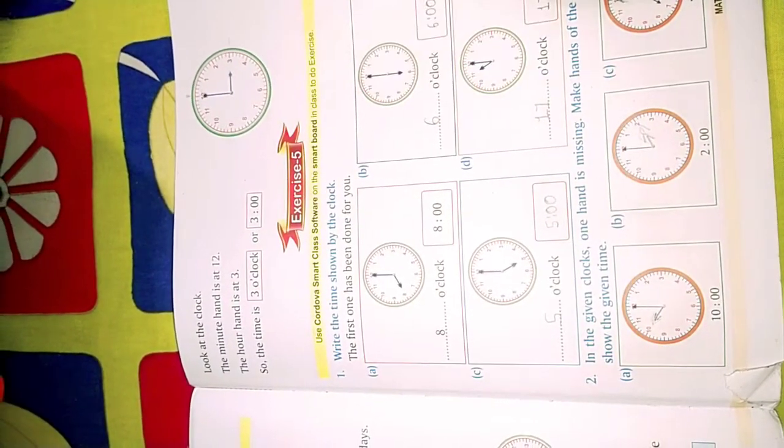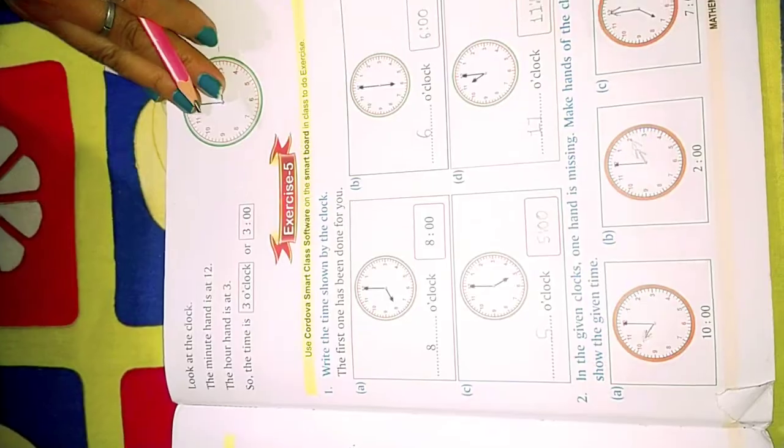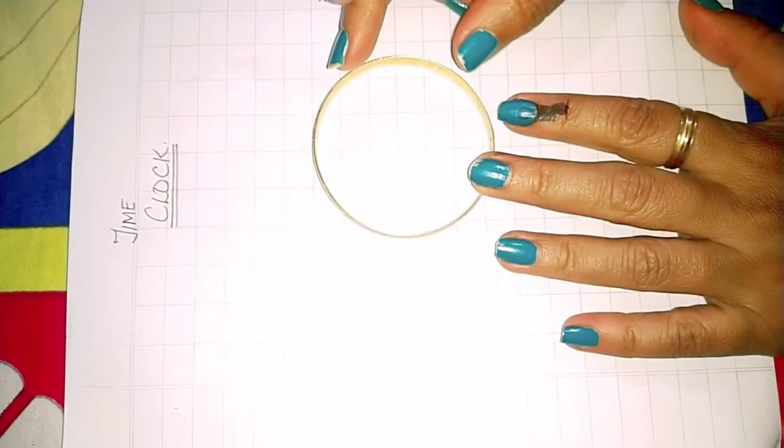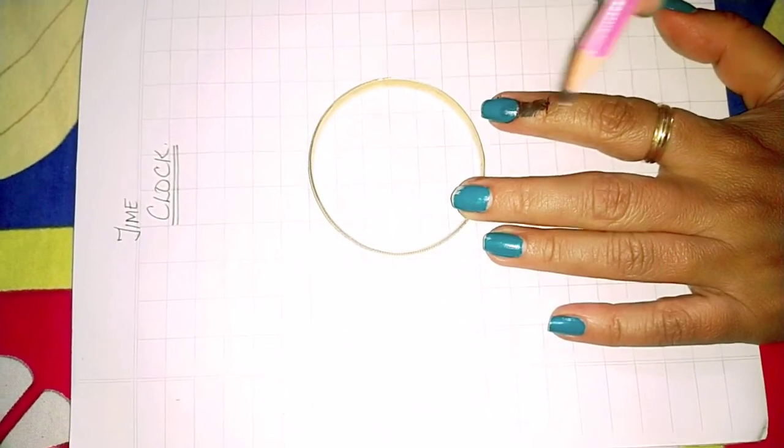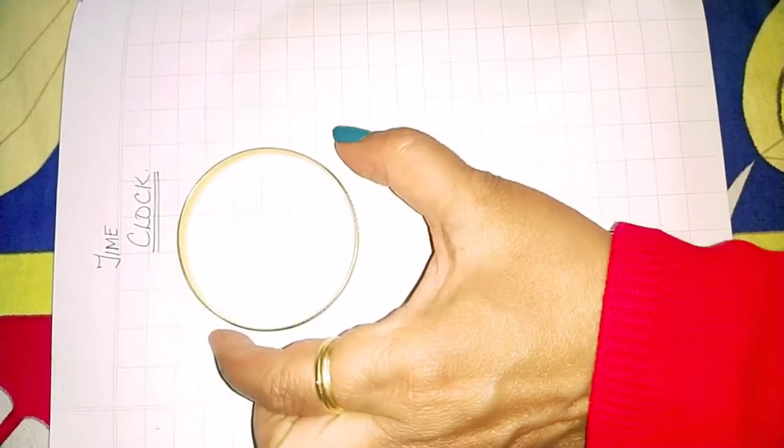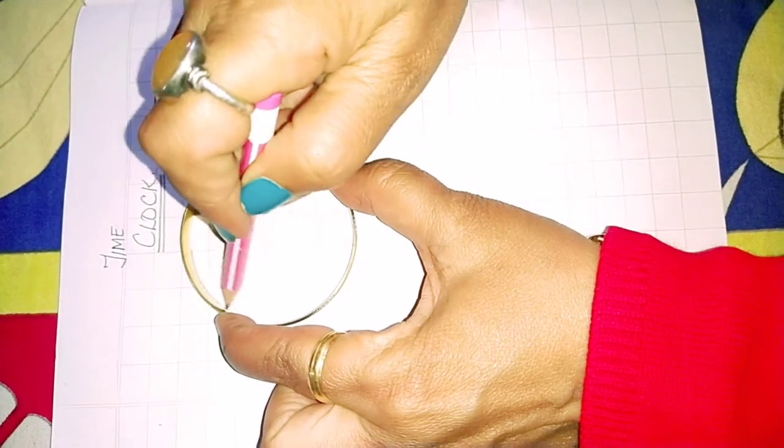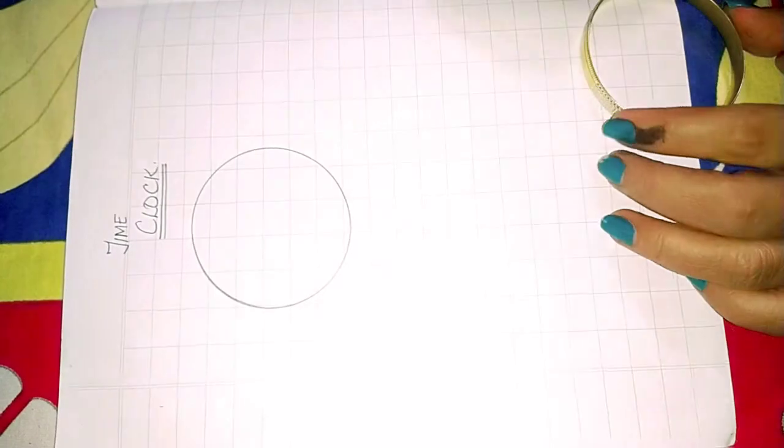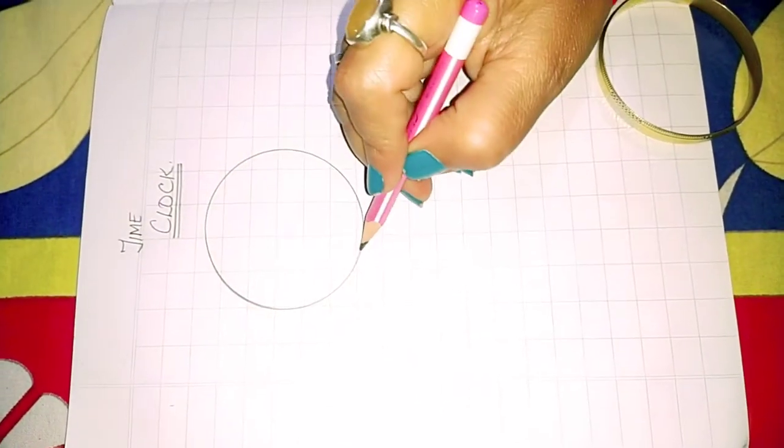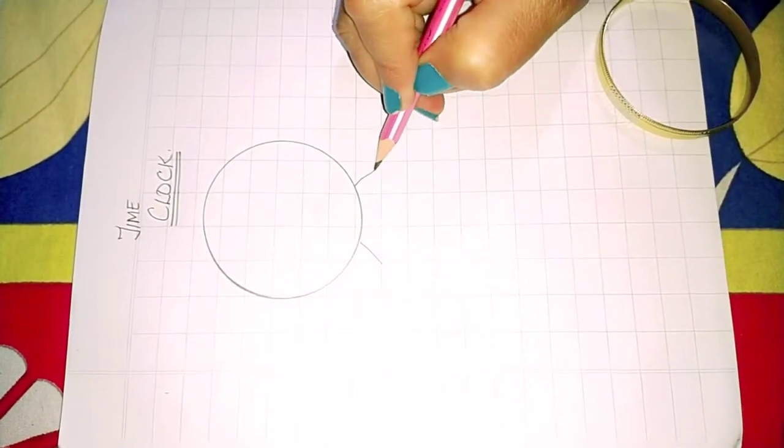So you do this, page number 125. Now I will show you how to draw a clock and how to show the time. You take a bangle and you make a nice neat circle. Then here you make a stand of the clock.